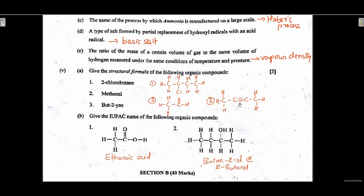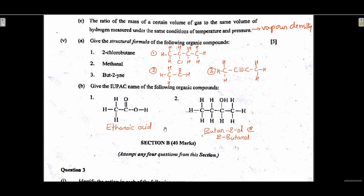Give IUPAC names of the following organic compounds. First compound with —CHO is ethanoic acid — wait, it is ethanol/ethyne. Second compound: four carbons with —COOH is ethanoic acid. Third compound: four carbons with alcohol at position 2, all single bonds, is butan-2-ol. This is Section A — it was very easy.